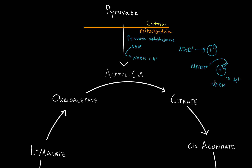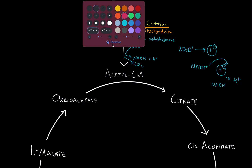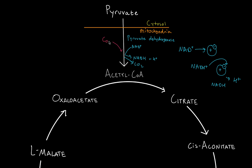When we look at the electron transport chain, NADH will transfer that electron to create a proton concentration gradient. Since this is a decarboxylation reaction, we're also going to lose CO2. To create acetyl-CoA, we need CoA. So CoA plus NAD+ results in NADH, H+, and CO2, which creates acetyl-CoA — modeled as two carbons attached to CoA.